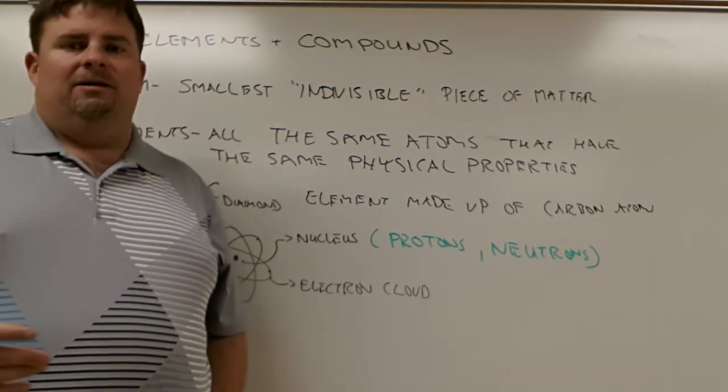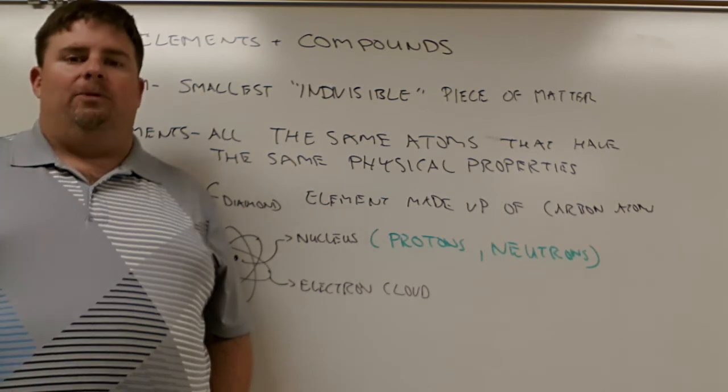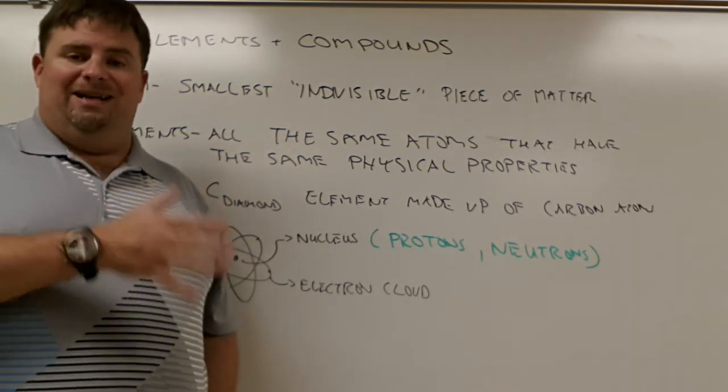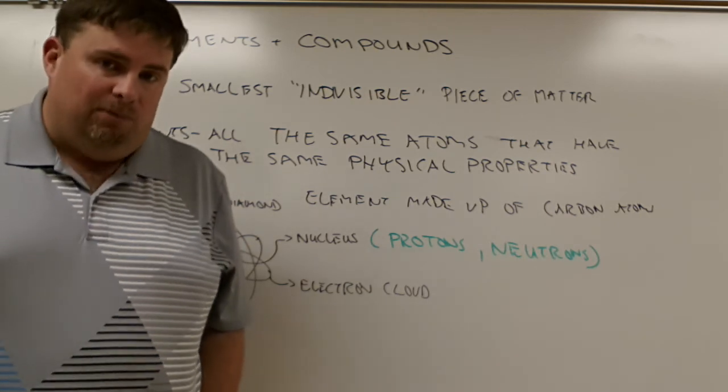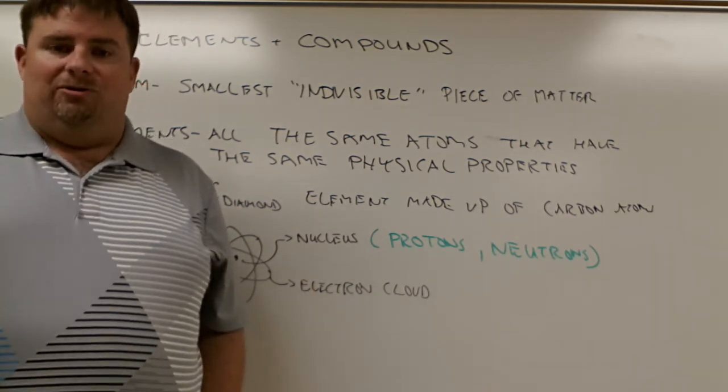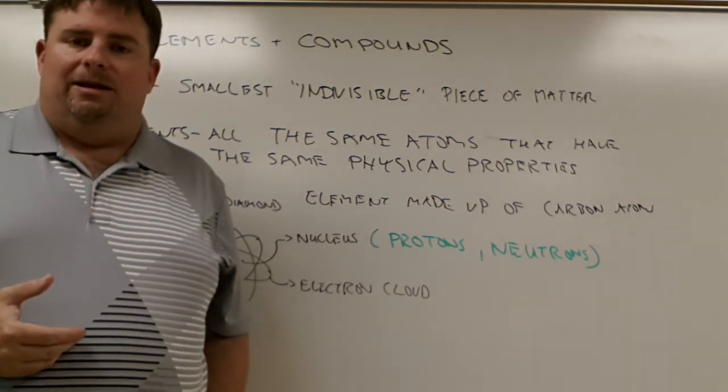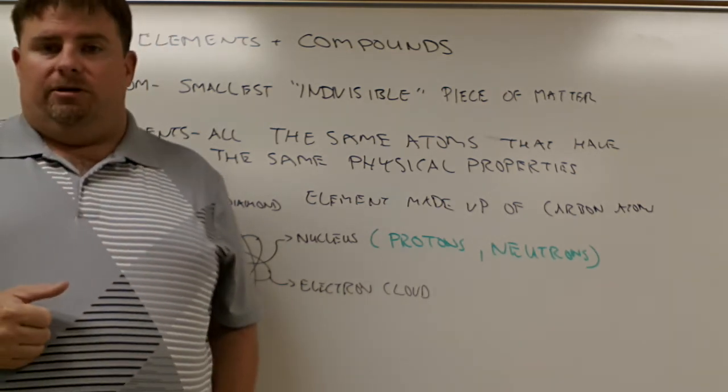So we end up seeing the decay products. So when you hear people talking about we found the Higgs boson, they didn't find the Higgs boson. What they did is they found the predicted decay pattern of a Higgs boson, and that's why CERN was so excited about what they found in their supercollider a little while ago. It's because they found something that they think matches the Higgs boson.